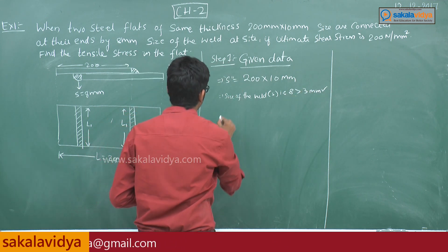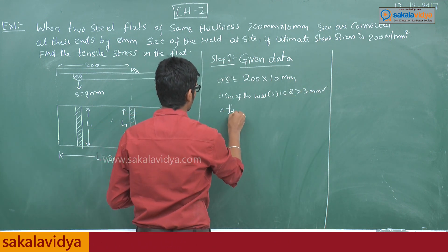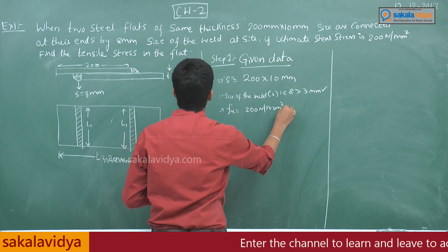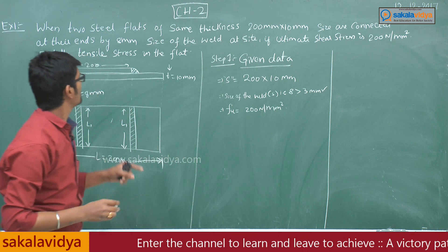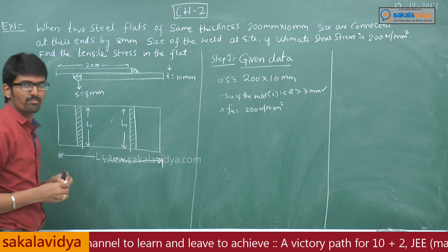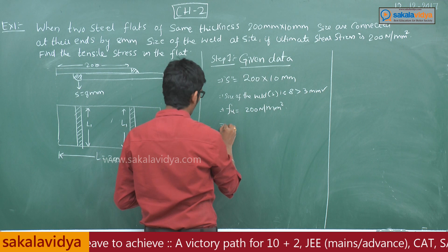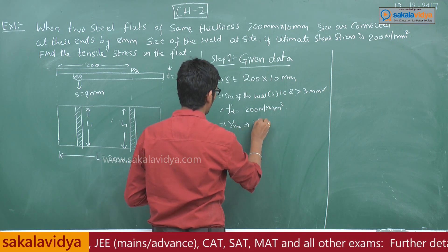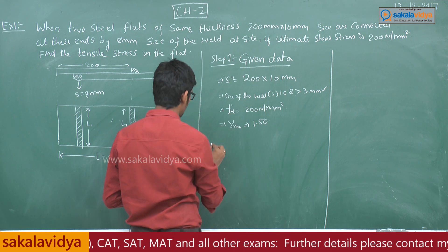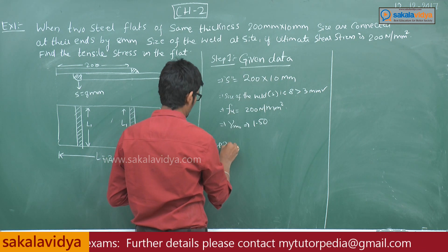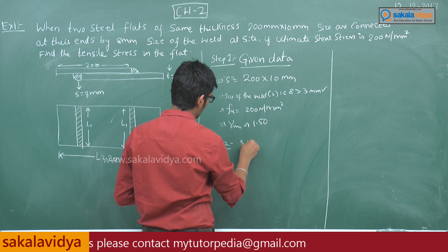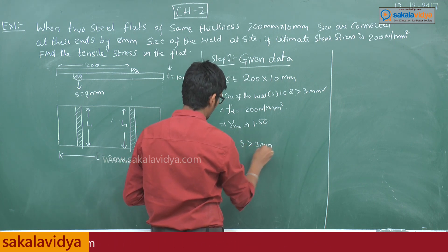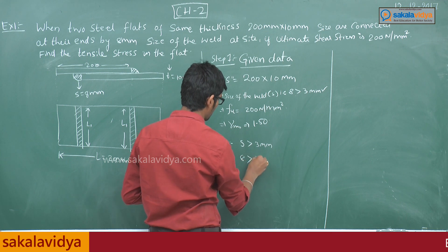The ultimate shear stress, fu, is equal to 200 Newton per mm square. The partial safety factor is 1.50. Step 2: The size of the weld is 8mm, which is greater than or equal to 3mm, hence it is valid.